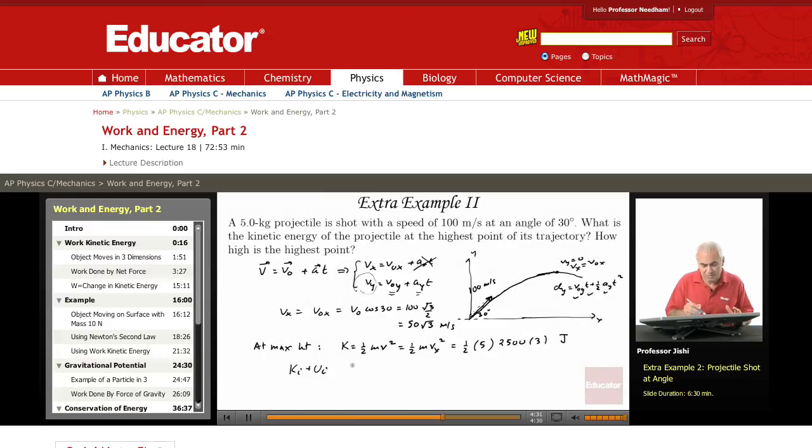In this approach, note that the initial energy, KEi + Ui, that's the total initial energy, must be the same as the total final energy, KEf + Uf. KEi is just (1/2)mv².